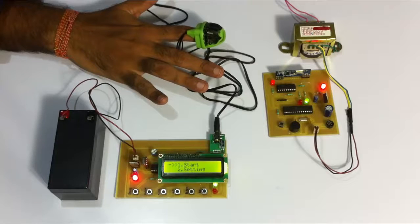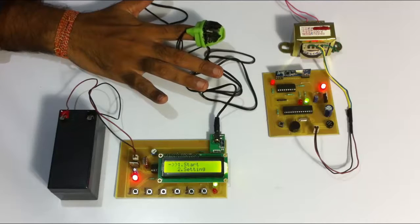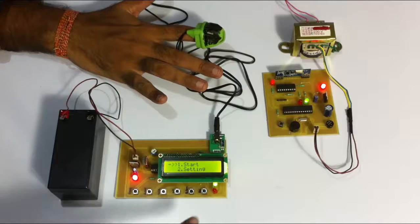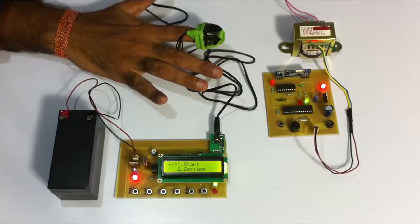One more feature in this system is that user can also manually send a distress signal. Suppose the user cannot swim or has reached a depth where he cannot properly swim and is about to drown, he can also manually send a distress signal by pressing this button here.